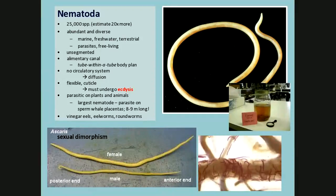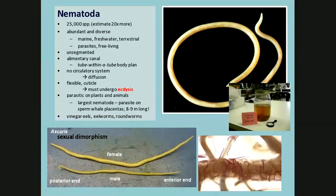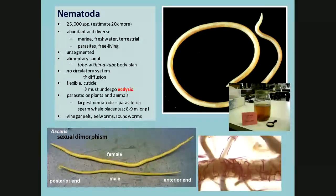Many organisms — like whales and dolphins — are born with parasites because parasites can cross the placental interface with the mother. This nematode is parasitic on the placenta of sperm whales. Down in the lower right, the little purple things are parasitic nematodes on plant roots, so they can also be problematic agriculturally.